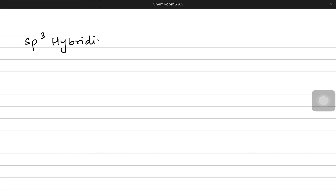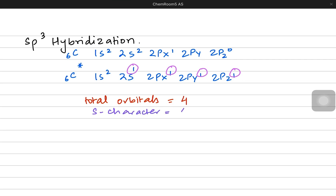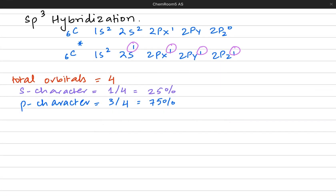Let's explore sp3 hybridization further. Carbon had four orbitals: the s orbital, px, py, and pz. After hybridization we get four hybrid orbitals total. Since one out of four is the s orbital, the s character is 25%. The product hybrid orbitals would have 25% s characteristics and 75% characteristics of a p orbital.